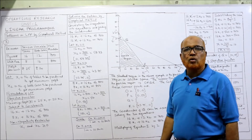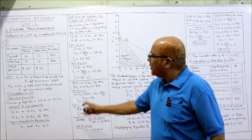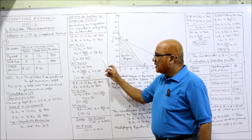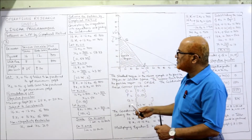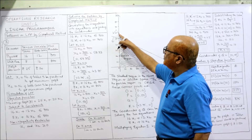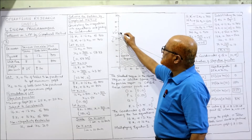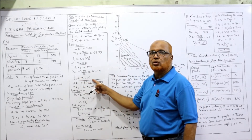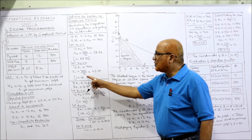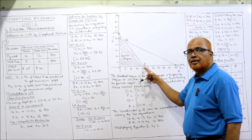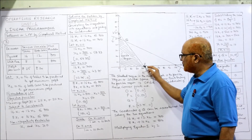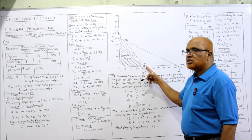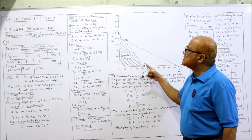Now plot the coordinates. For the first constraint: when x1 = 0, x2 = 58.33 — mark this point on the y-axis just below 60. When x2 = 0, x1 = 43.75 — mark this on the x-axis at 43.75. We now have two marks: 58.33 on the y-axis and 43.75 on the x-axis.